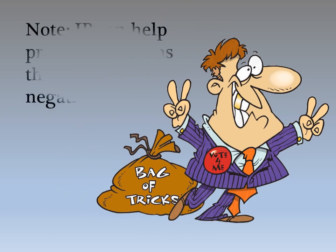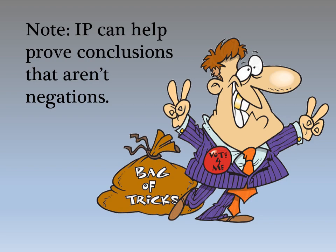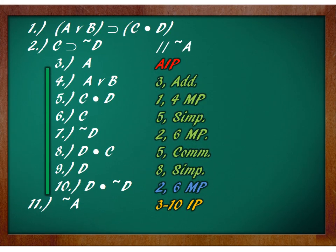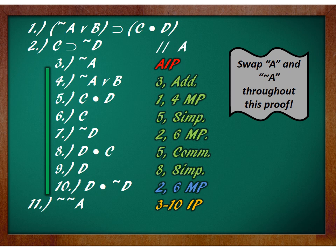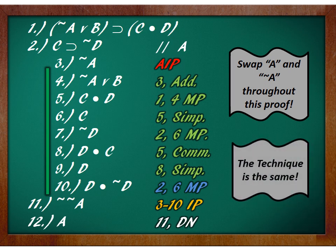There are plenty of tricks when dealing with indirect and conditional proofs. One trick: indirect proofs can help prove conclusions that aren't negations. Here's a proof we did earlier — we didn't have to prove tilde A. If you swap A for tilde A throughout the entire proof uniformly, you can prove a conclusion like A instead. When you get to the bottom, because on line 3 we introduced tilde A as assumption for conditional proof, we negate that down on line 11, and then use double negation. Indirect proofs are handy for all sorts of proofs — both proofs of negations and proofs of positive claims.